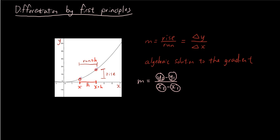Therefore, rewriting that gradient, we can now say instead of x2 and x1, we can say x plus h minus x.